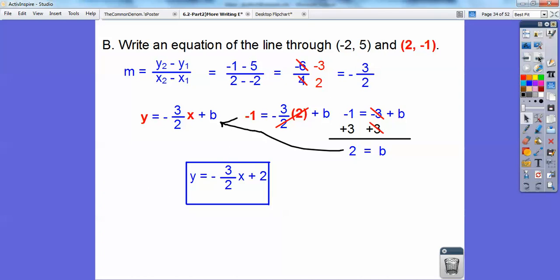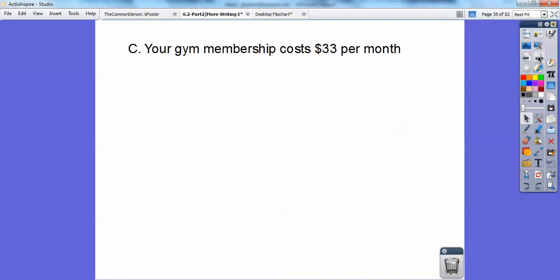Let's put that back in where the b is over there. So y equals negative 3 halves x plus 2. Here's another one.